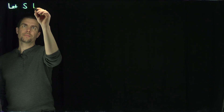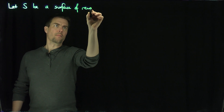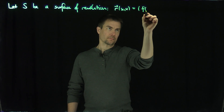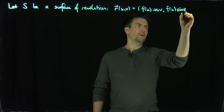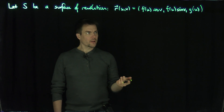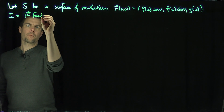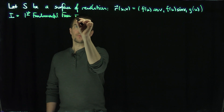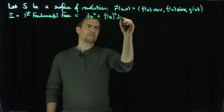Let S be a surface of revolution. I'll parametrize it as we typically do: f(u)·cos(v), f(u)·sin(v), and g(u). The first fundamental form, which we computed in the past, is equal to du² plus f(u)² dv².